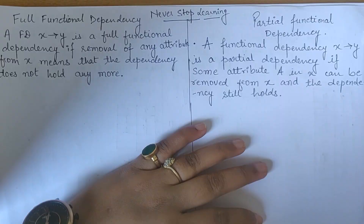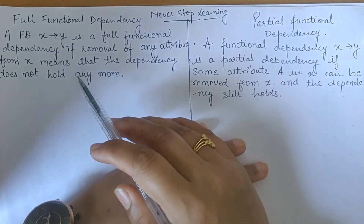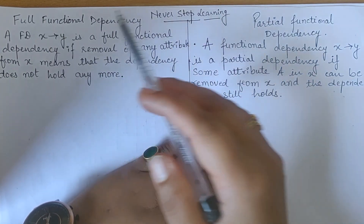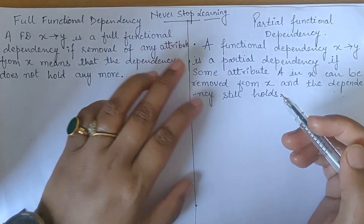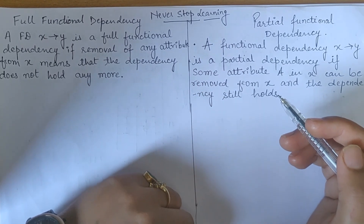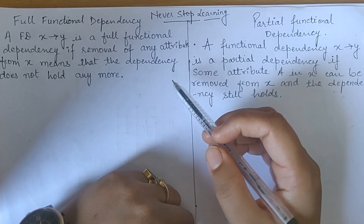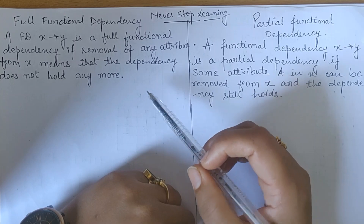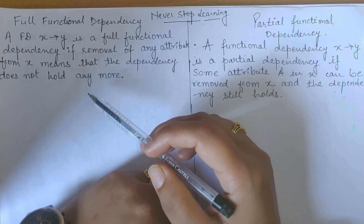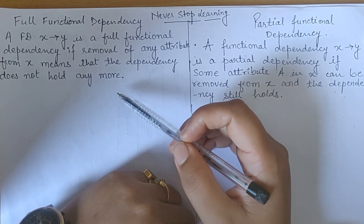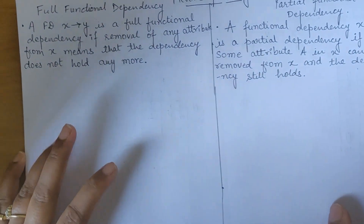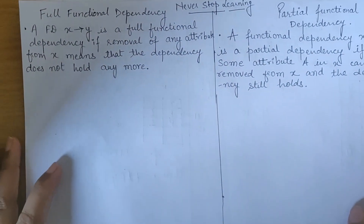To understand the definition: a functional dependency X determines Y is a full functional dependency if removal of any attribute from X means that the dependency does not hold anymore. So let's understand this with an example so that this definition will be clear to you.